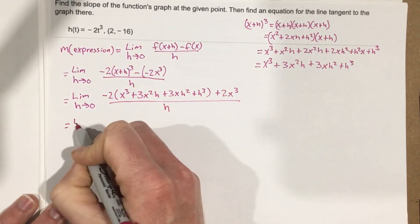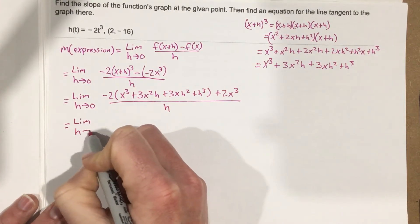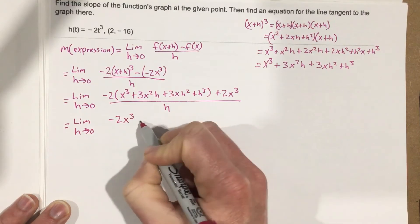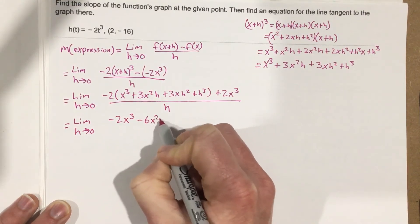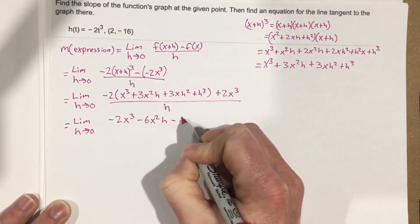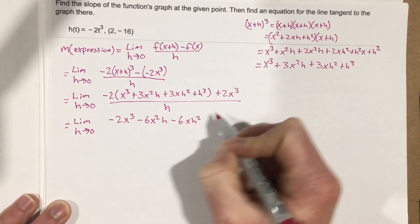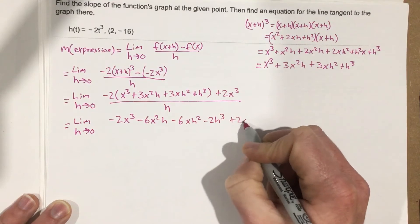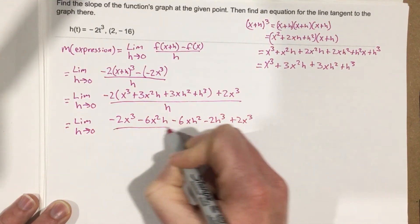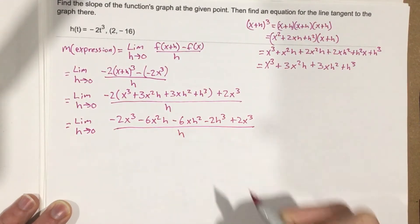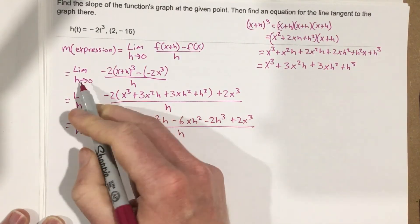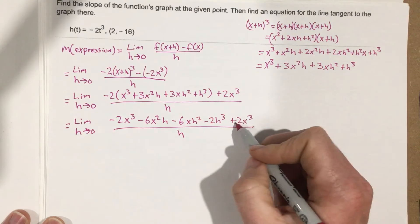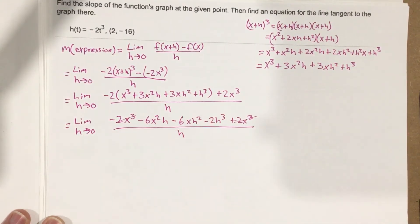Let's go ahead and distribute then. We have limit as h approaches 0, negative 2x cubed minus 6x squared h minus 6xh squared minus 2h cubed plus 2x cubed all over h. And don't forget our goal is to cancel this h out because when we take the limit as h approaches 0, that gives us something undefined. And we can cancel the 2x cubes.